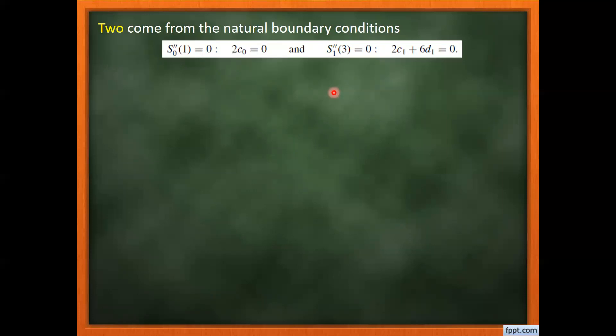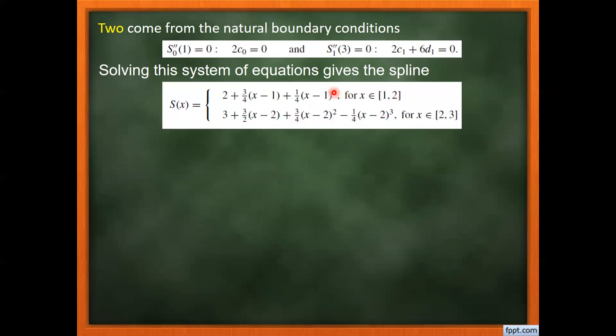We still need two further conditions because we have six equations but eight unknowns. Using the natural boundary condition: the second derivative of S0 at the initial node 1 equals zero gives 2C0 = 0, and the second derivative of S1 at the last node 3 equals zero gives 2C1 + 6D1 = 0. Now we have eight equations and eight unknowns, which can be solved simultaneously.